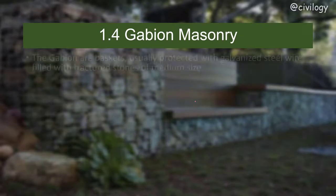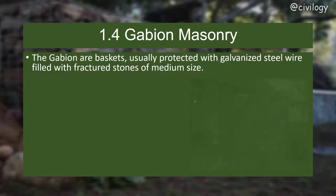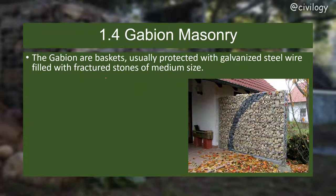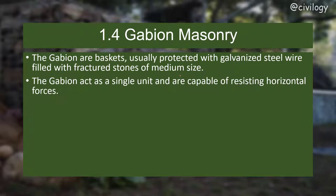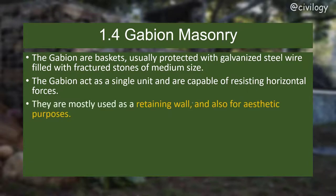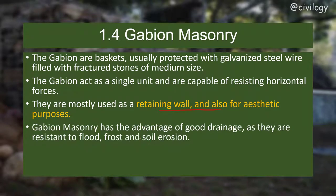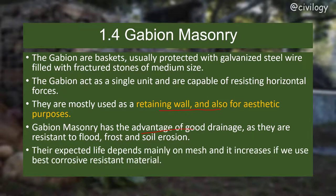Gabions are baskets protected with galvanized steel wire and filled with medium-sized fractured stones. The gabion acts as a single unit capable of resisting horizontal forces, and they are mostly used as retaining walls and for aesthetic purposes. Gabion masonry has good drainage and is resistant to flood, frost, and soil erosion. Their lifespan increases with the use of corrosion-resistant mesh material.